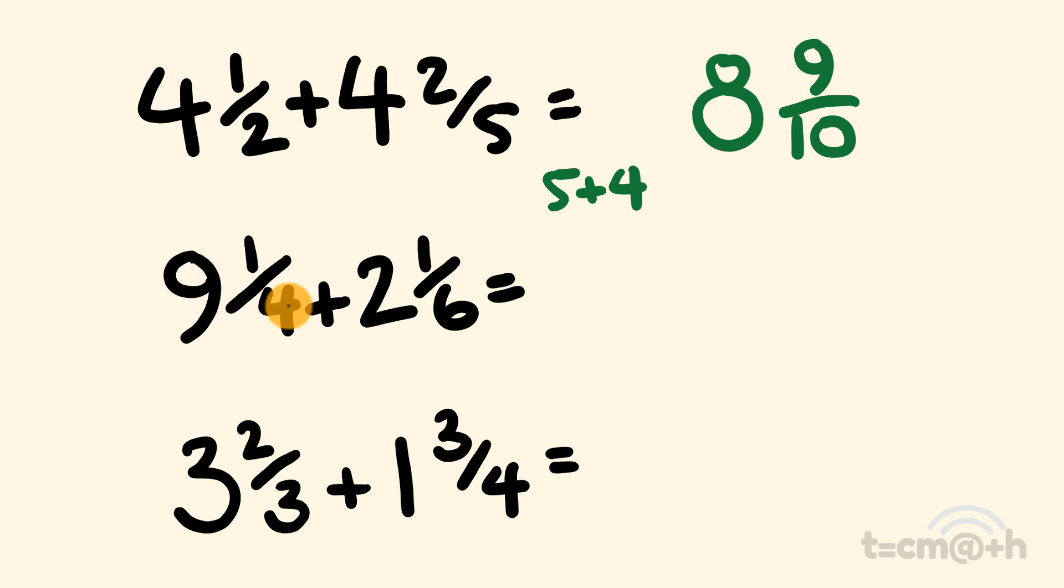So now let's have a look at nine and a quarter plus two and one sixth. First off, we'll get the denominator. So we have four times six is equal to twenty-four. Pretty simple. Next, what we're going to do is cross multiply. So one times six is six. And to that, we're going to add one times four, which is equal to four. So six plus four is equal to ten.